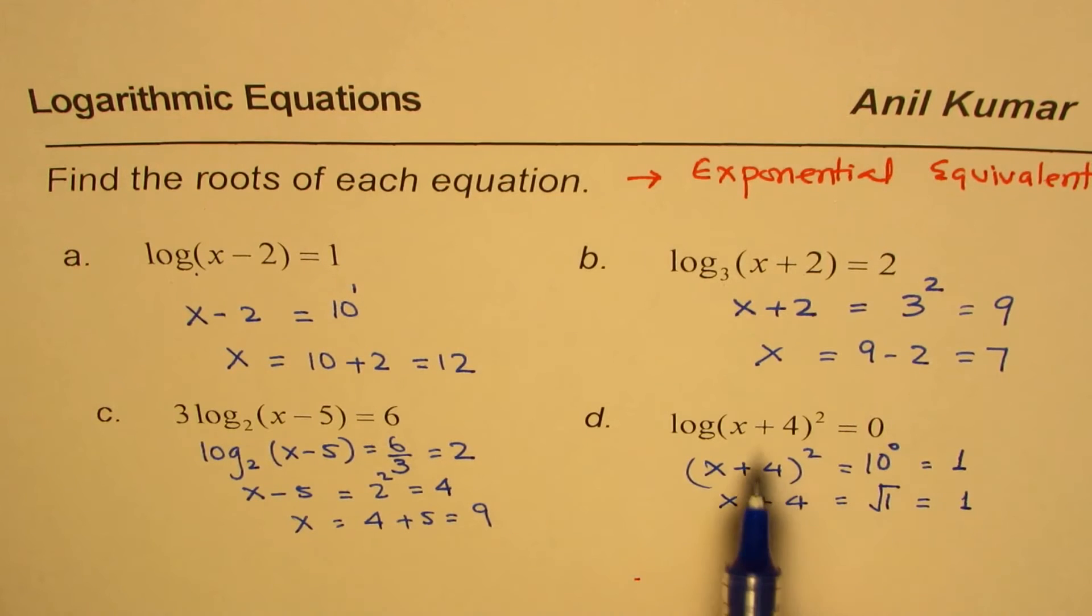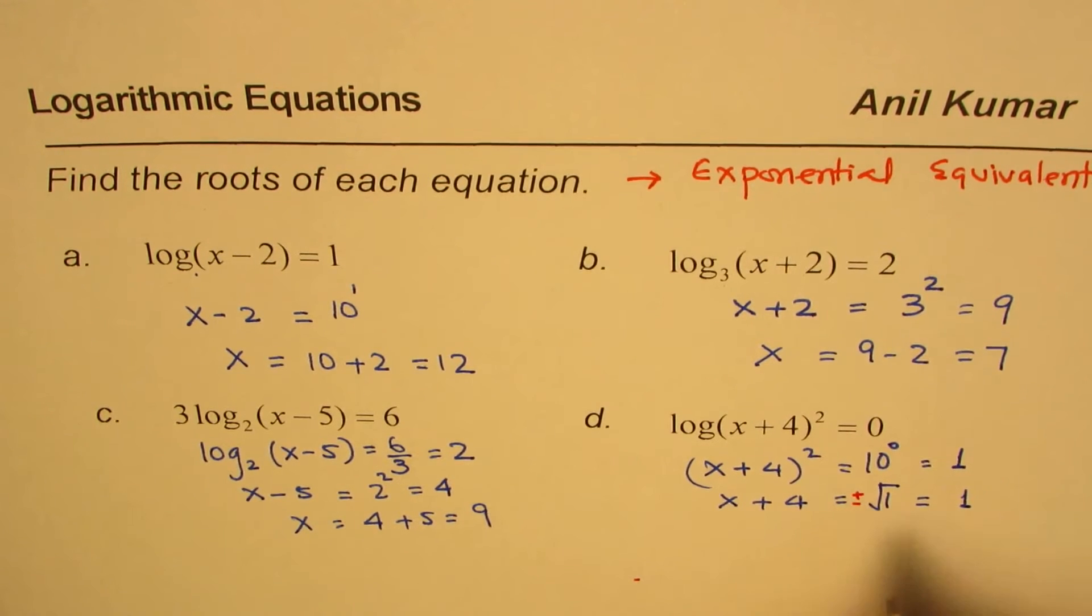Now, a couple of important things to understand here. Whenever you do square root, you can actually take plus and minus values. So I'll write plus and minus value here. Square root gives us plus or minus 1.